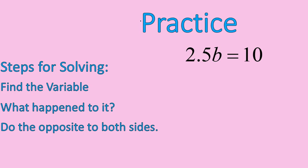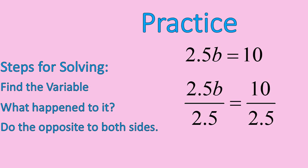Let's take a look at our next one. This is a practice question for you. 2.5b is equal to 10. Use the steps on the left and solve it. Pause the recording, try and see what you get. Hello, welcome back. The steps for this one here are pretty straightforward. Find the variable. The variable is the letter, so in this case it's b. What happened to it? I multiplied it times 2.5. So, I'm going to do the opposite to both sides of this equation. I'm going to divide both sides by 2.5. 2.5 divided by 2.5 cancels out, and I'm left with b by itself on the left. 10 divided by 2.5 is equal to 4.